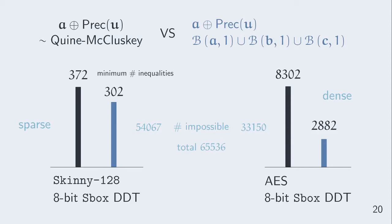We think this difference comes from the density difference between the two DDTs. Indeed, the sparse Boolean function of the Skinny S-box DDT allows to find many big sets A plus Prec of U, and those big sets do much of the work. For the AES S-box, because the DDT is so dense, the balls techniques are better suited for covering the impossible points.